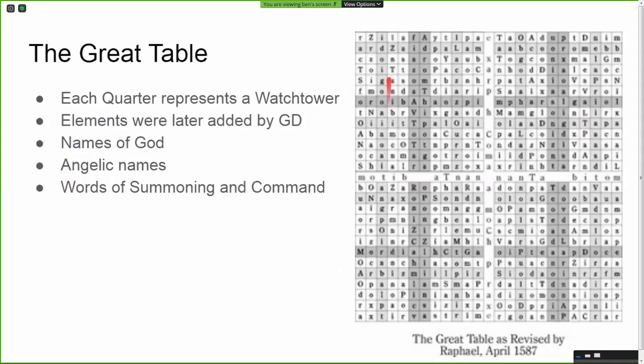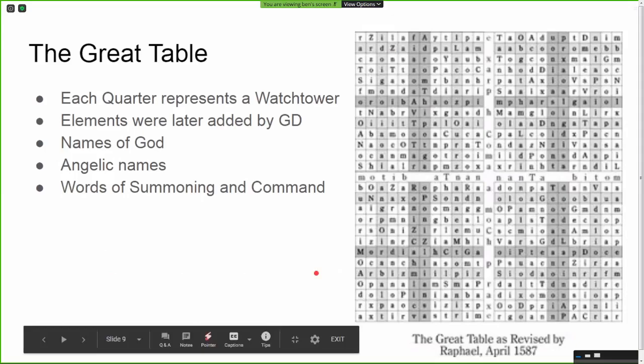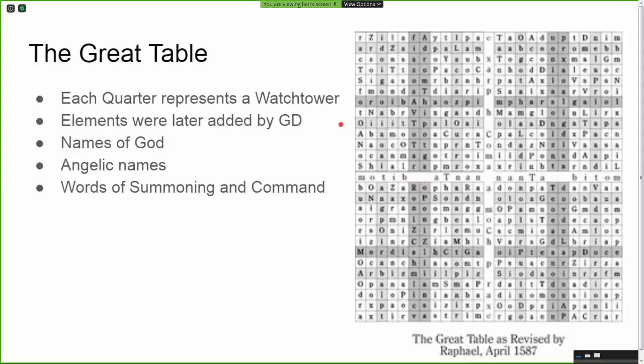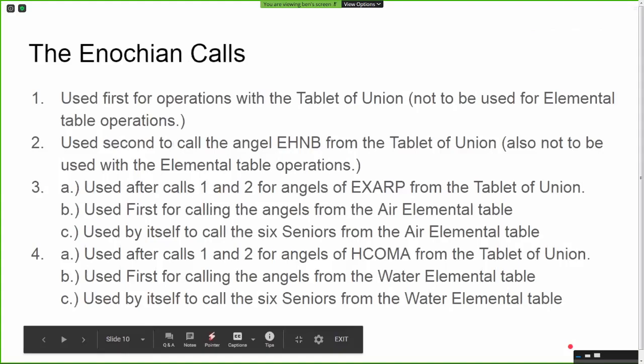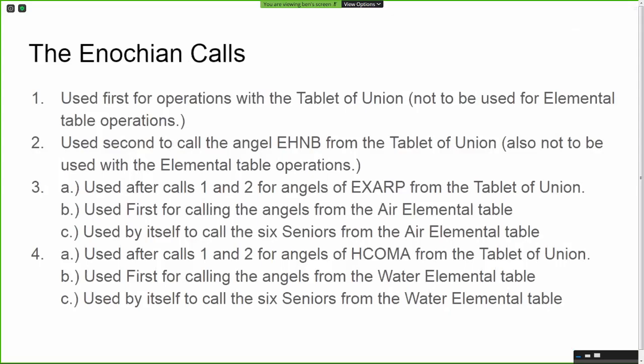Each of these sub-quarters includes a bunch of names of God, angelic names, and words of summoning and command. I'm going to break down where you can find each of the names as we go on, but first I want to talk about the Enochian calls, because these are the invocations used to contact the angels of the Enochian system.